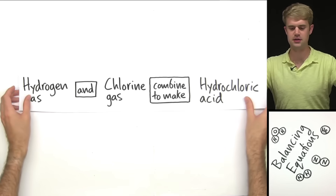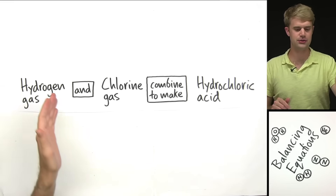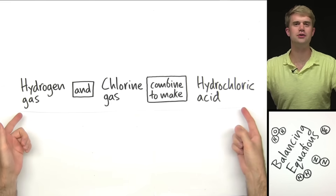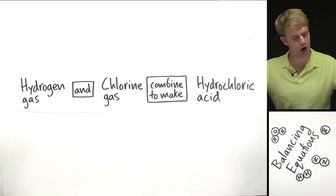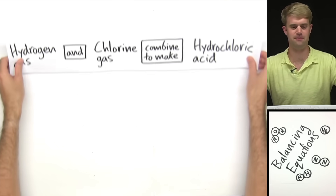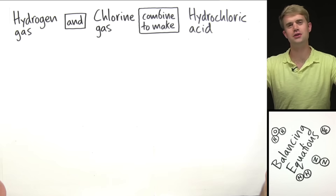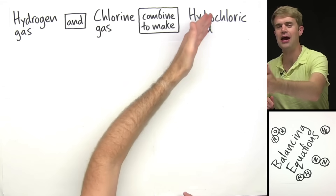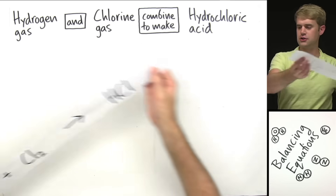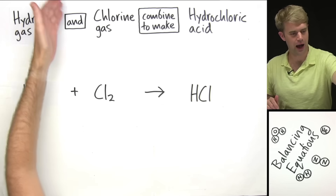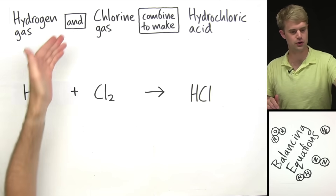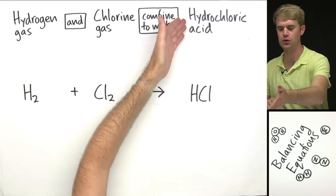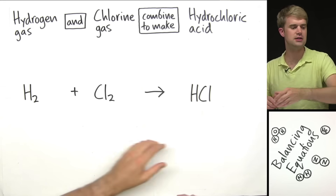We'll begin by looking at this chemical reaction: hydrogen gas and chlorine gas combine to make hydrochloric acid. This is how we express this reaction using words — we call this a word equation. Now we can use this word equation to write a chemical equation by writing the chemical formula for each substance. Hydrogen gas is H₂, chlorine gas is Cl₂, and hydrochloric acid is HCl.